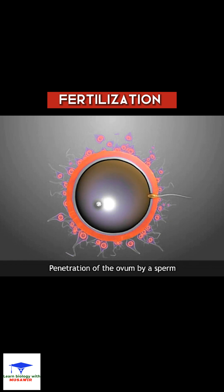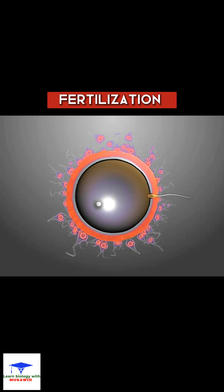Observe the penetration of the sperm. Its head bears the acrosome and the male nucleus. The sperm leaves its tail outside the ovum and only the nucleus is released into the ovum.